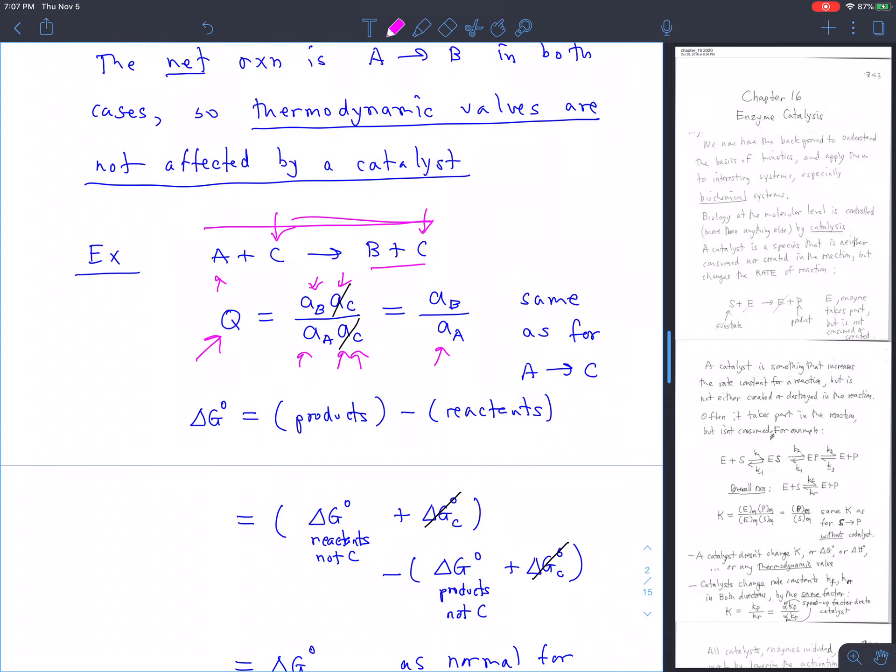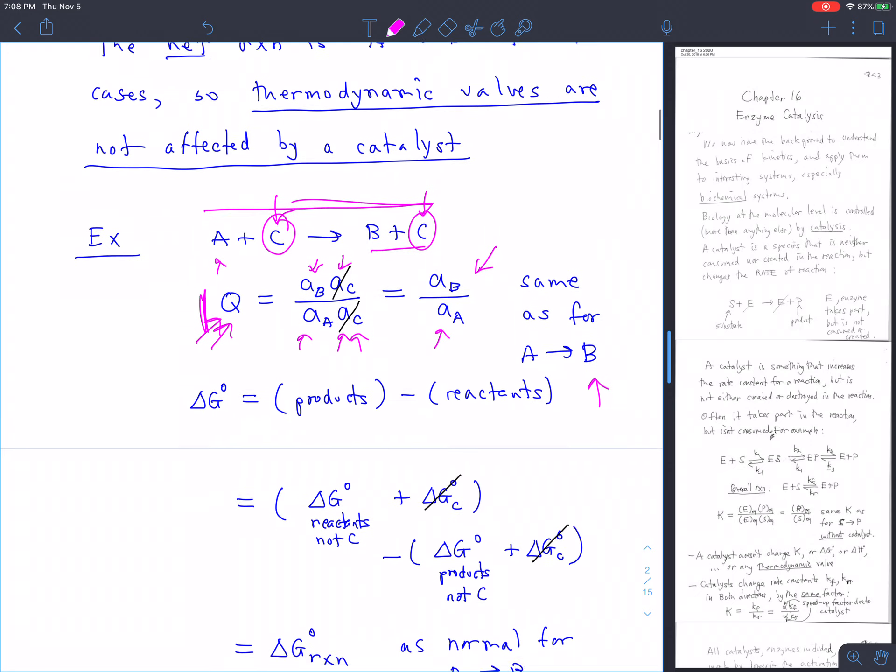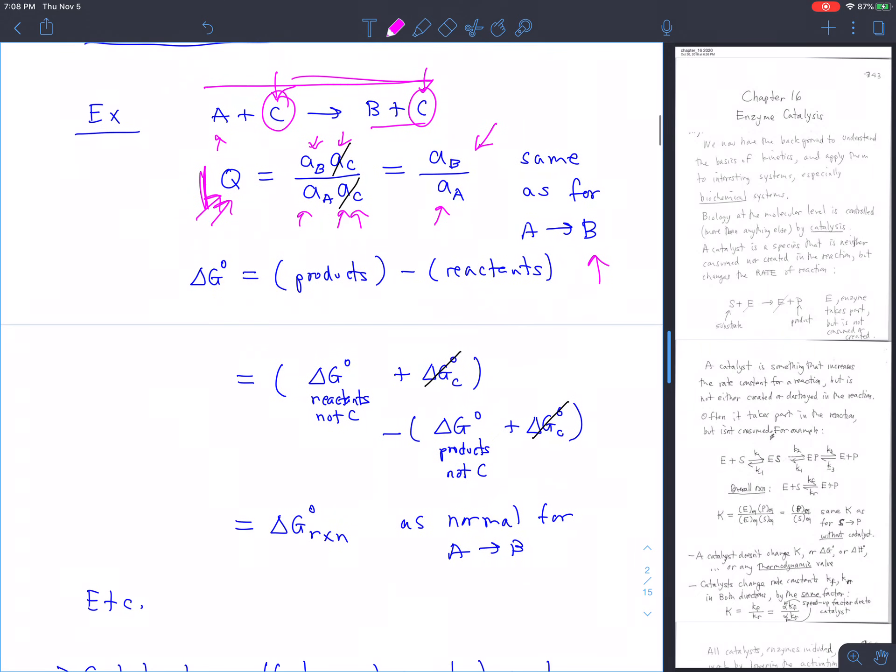Which is exactly the same thing you would have gotten if C weren't there. The presence of C doesn't change the reaction quotient, doesn't change the equilibrium constant. This has to be true at equilibrium, where Q is equal to K, so it doesn't change the equilibrium constant. It's the same as the reaction didn't have the C's at all, it was just A goes to B.